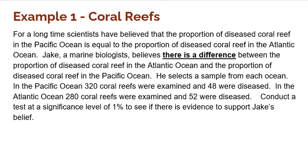In the Pacific Ocean, he gets 320 coral reefs, 48 are diseased. And in the Atlantic Ocean, 280 coral reefs he gets in his sample, and 52 are diseased. Now, does this show evidence that he's right and that there is a significant difference between the proportion in each ocean that are diseased?